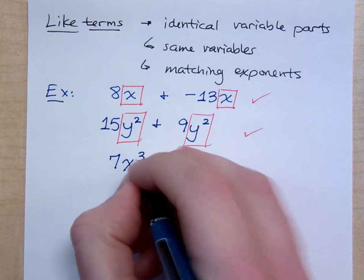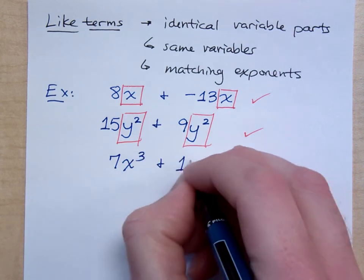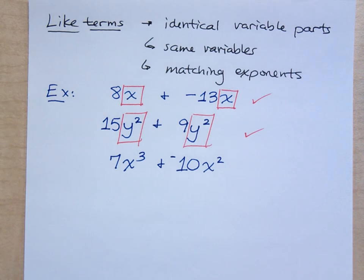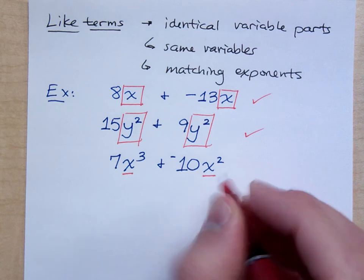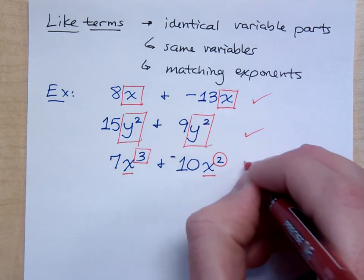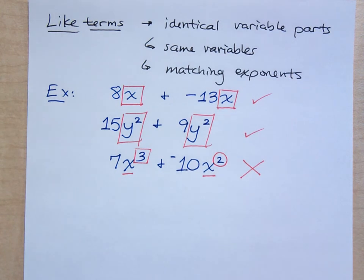If I have 7x³ and -10x² are these like terms? Why are they not like terms? Although they have the same variable, look at their exponents. Are they the same? They are not like terms. These are not things that could be combined through addition or subtraction.